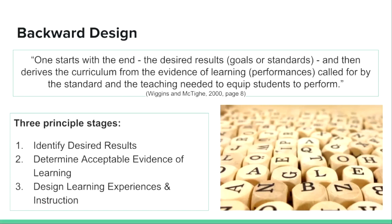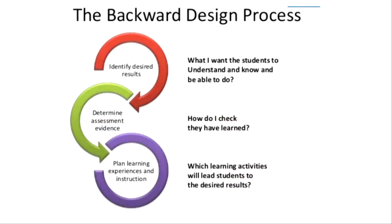If we put a graphic on it, it looks something like this. First, think about identifying your desired results — what do you want your students to understand, to know, or be able to do at the end of the course? Then think about how you will check what they've learned — what will be the evidence of learning? And finally, identify what learning activities will lead students to those desired results.